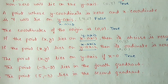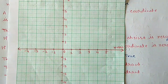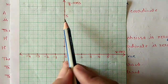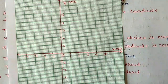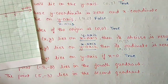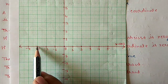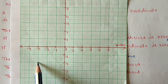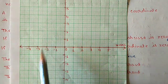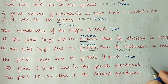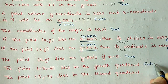Part g: the point (-3, -2) lies in the fourth quadrant. Looking at the graph, which is divided into four quadrants by the x and y axes — we plot -3 on the x-axis and -2 on the y-axis. The point falls in the third quadrant, not the fourth. So this statement is false.